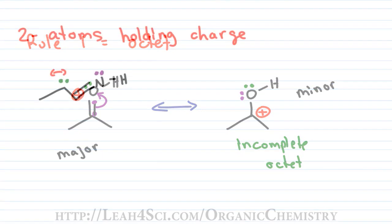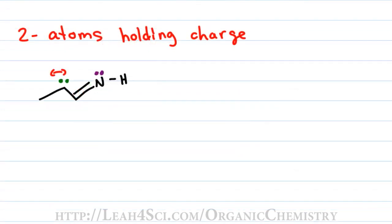If you're looking at resonance structures where atoms have complete octets but there's a choice of having the charge on one type of atom or another, pay attention to which atom is holding the charge. Remember, the more electronegative an atom is, the more likely it wants those electrons and the more stable it's going to be holding a negative charge. On the other hand, a less electronegative atom does not like those negative electrons and will be unhappy holding a negative charge.